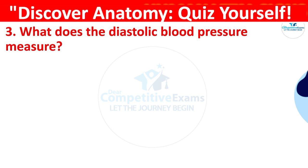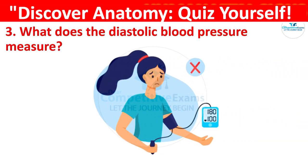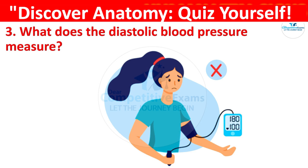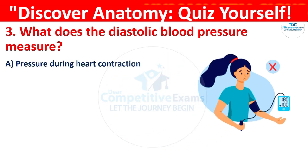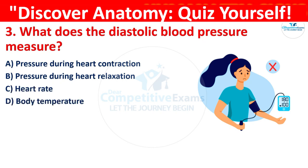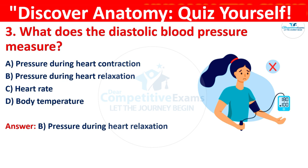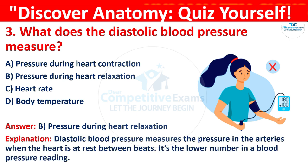Question 3: What does the diastolic blood pressure measure? Your options are: pressure during heart contraction, pressure during heart relaxation, heart rate, or body temperature. The correct answer is B, that is pressure during heart relaxation. Diastolic blood pressure measures the pressure in the arteries when the heart is at rest between beats. It is the lower number in a blood pressure reading.